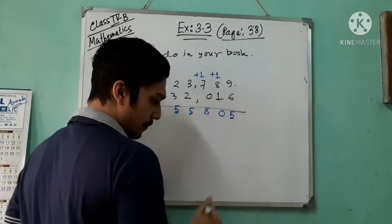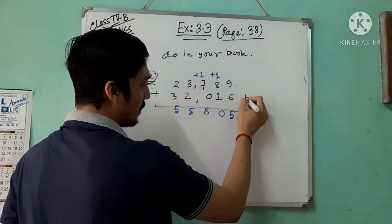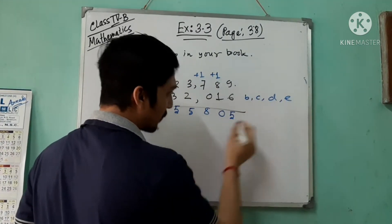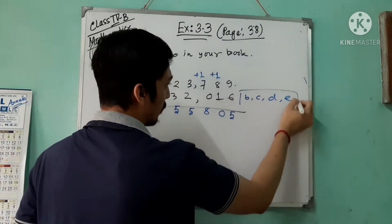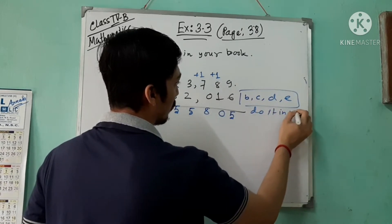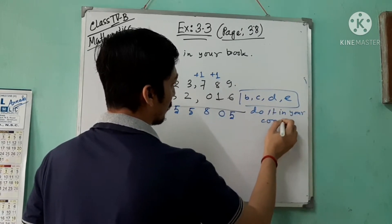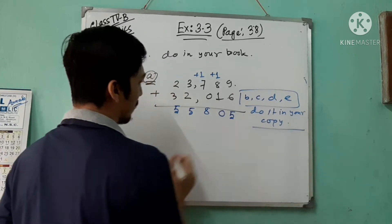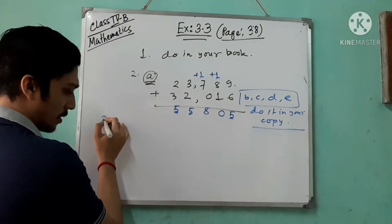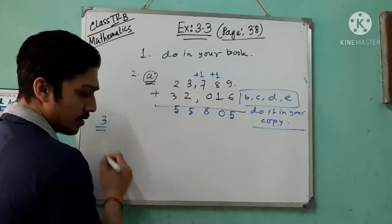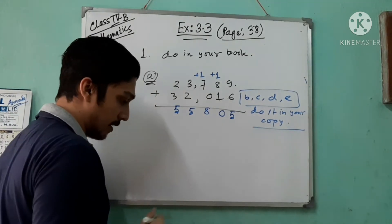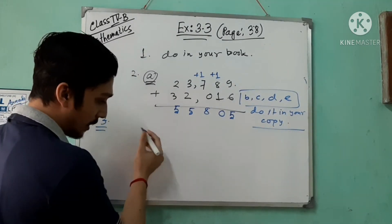For questions 1b, c, d, e — please do them in your copy. It is very easy. Now I'm coming to question number three: arrange in columns and add.